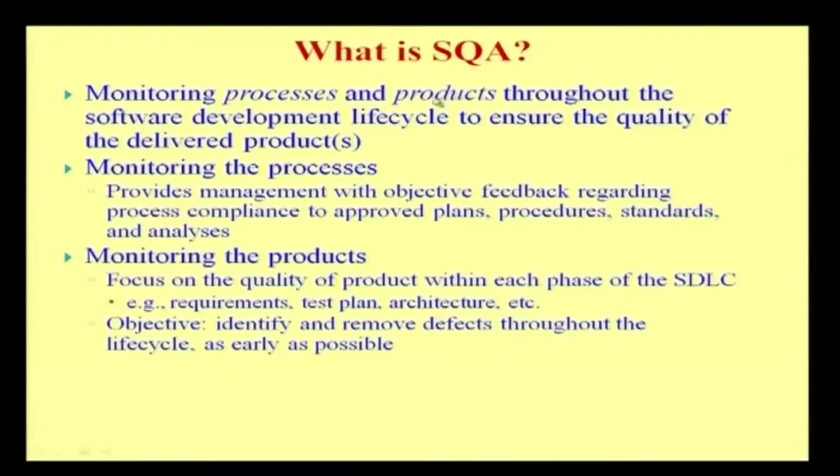As part of software quality assurance, one of the processes is monitoring the process and products throughout the software development life cycle to ensure the quality of the delivered product. It is not just the product that is to be maintained — it is also the processes that are to be maintained over a period of time. For example, comparing systems developed in 2000 versus 2010, there has been a large difference.